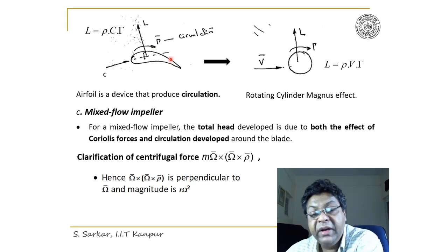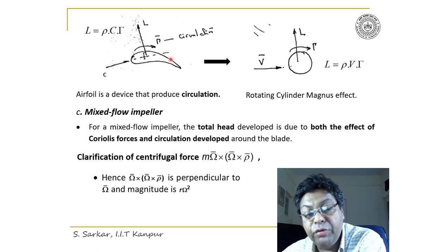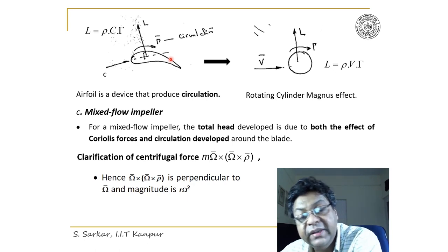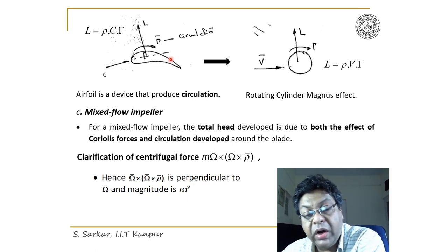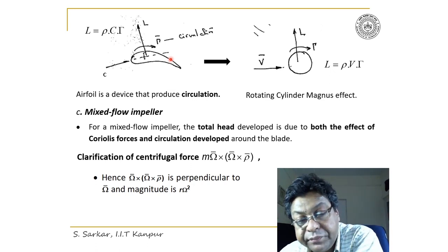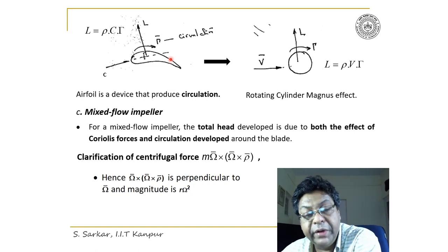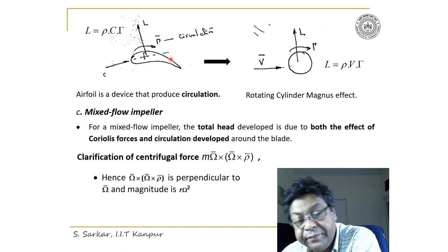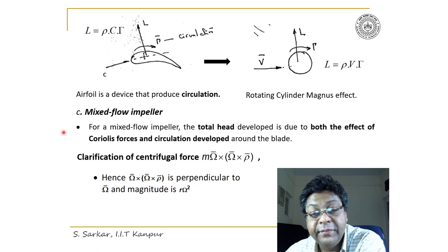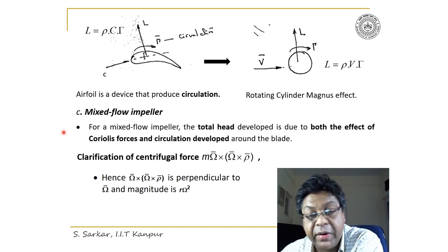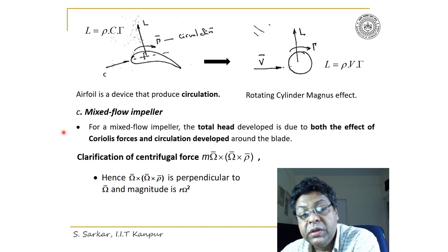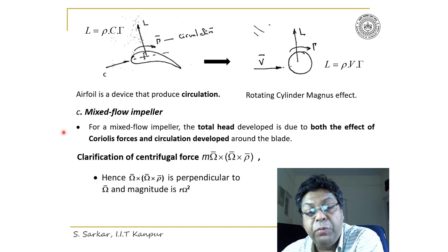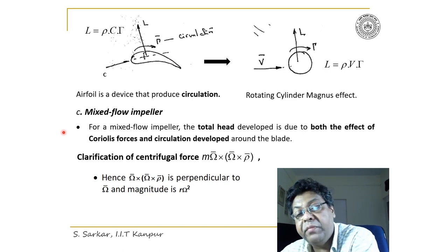In brief, in an axial flow machine, work transfer is required because of circulation and aerodynamic lift — there will be no effect of the Coriolis component for work transfer. In the mixed flow impeller, work transfer occurs because of both the Coriolis component and circulation developed around the blade.